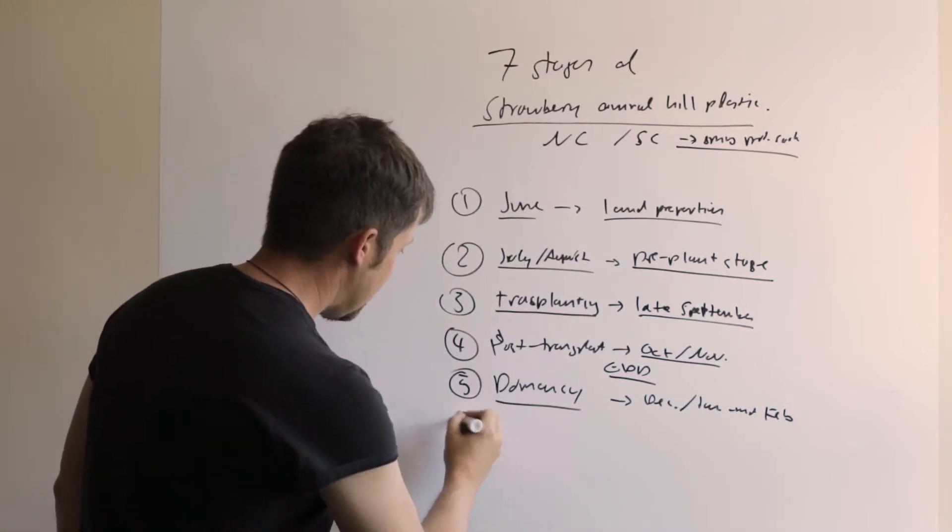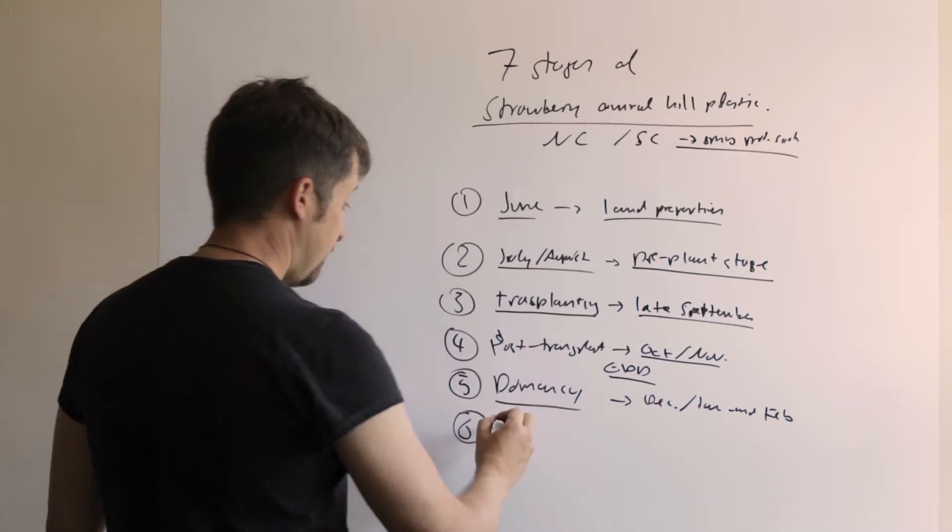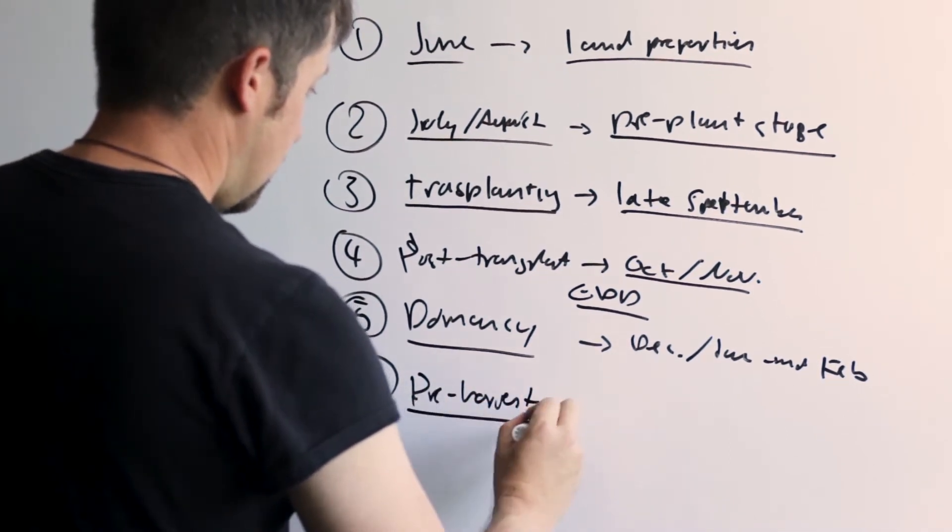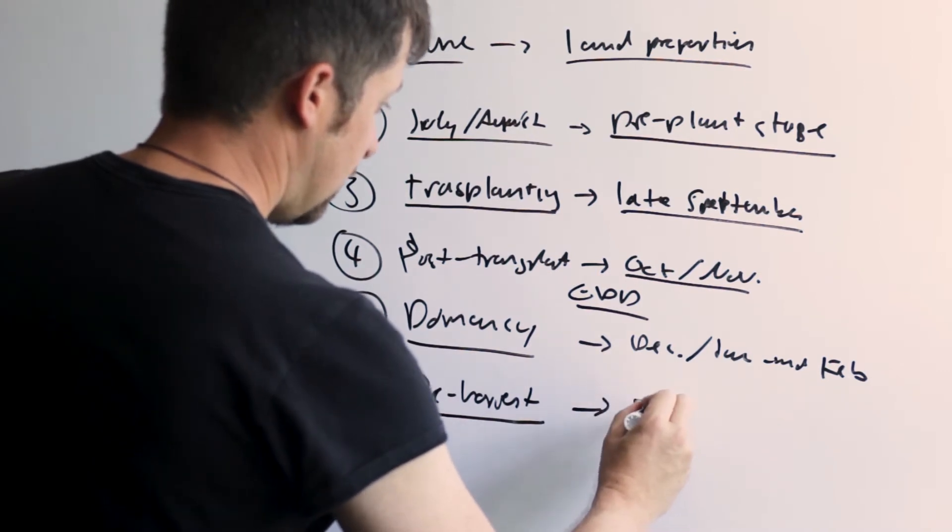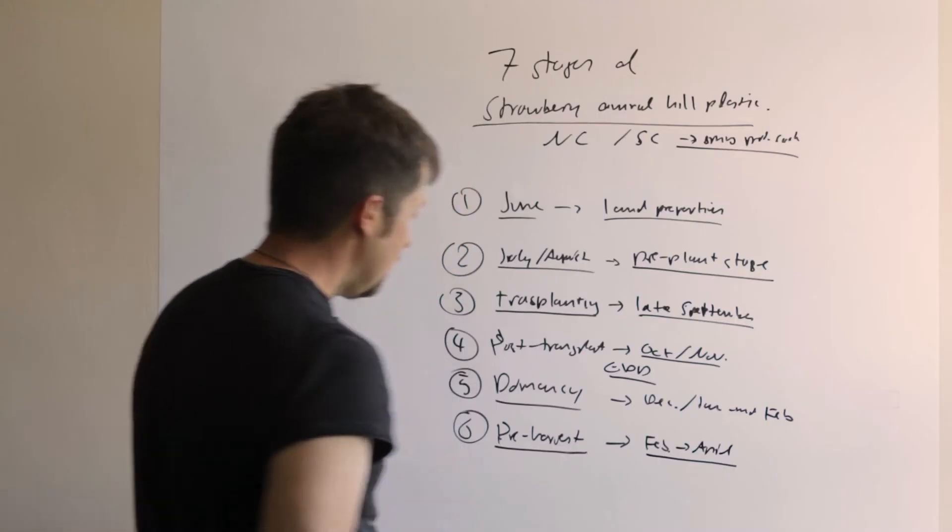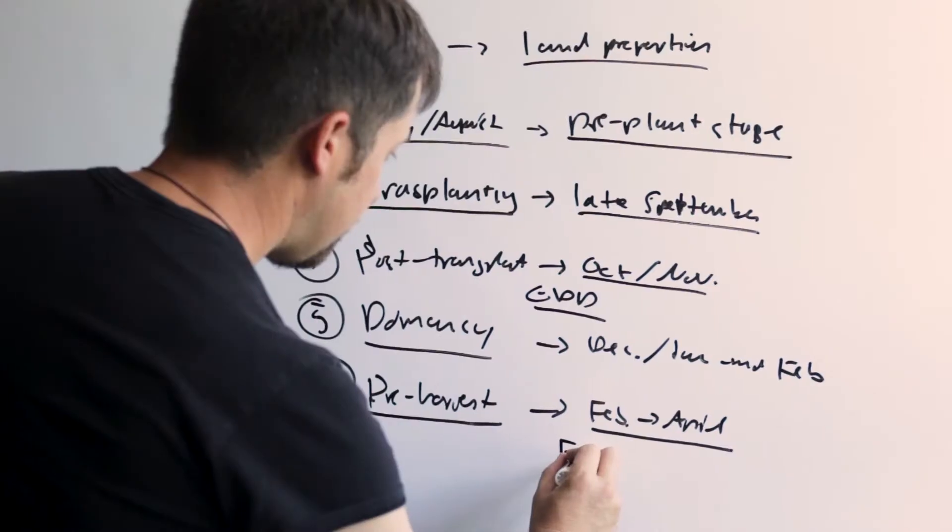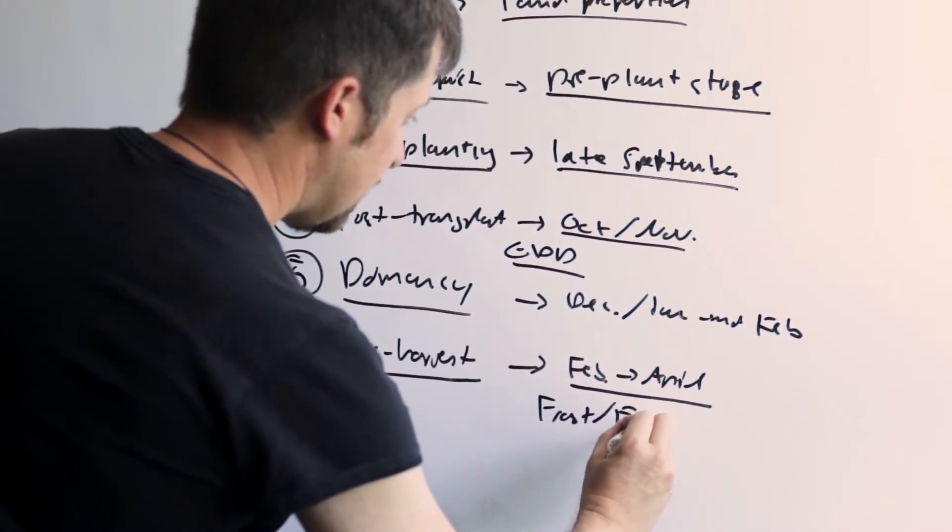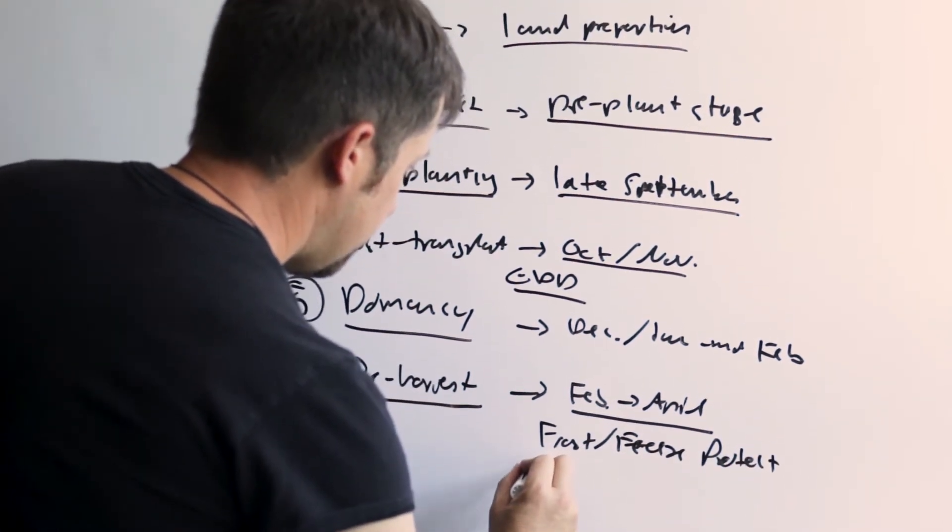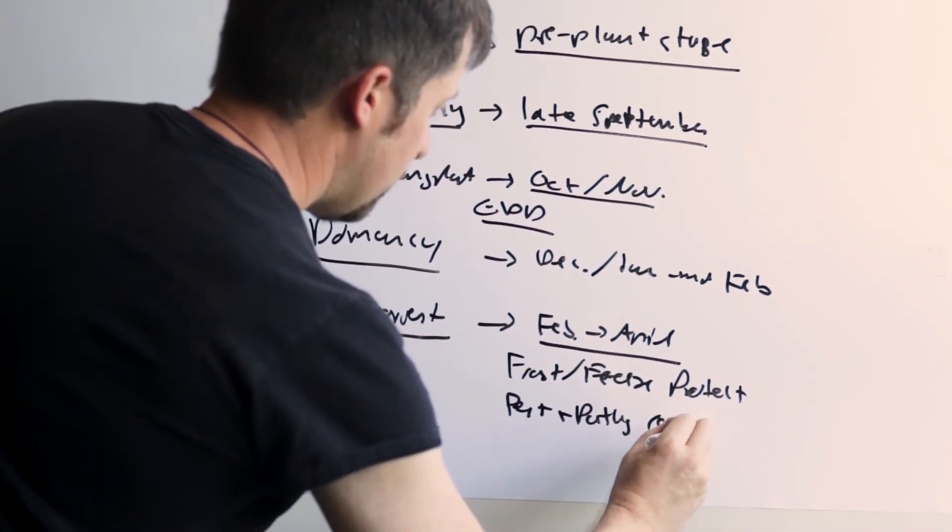And the sixth stage would be the pre-harvest stage. That again is February to April. Over this stage, it is very important to do cold or frost protection, frost and freeze protection. And pest and pathogen control are the biggest concerns here.